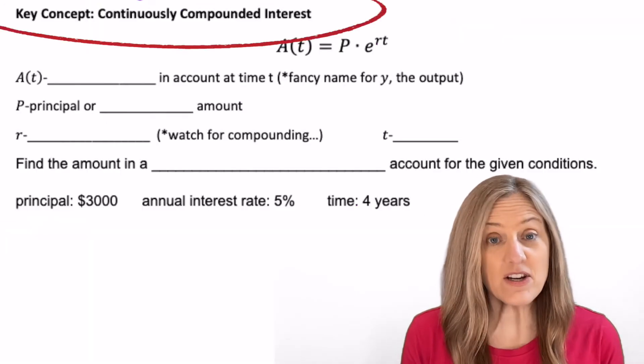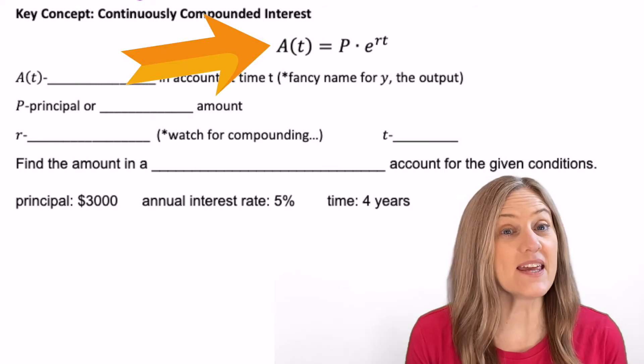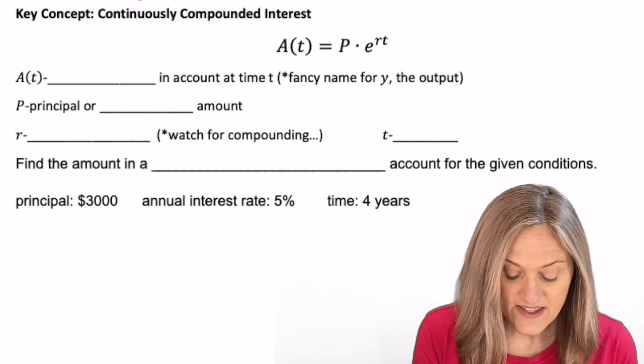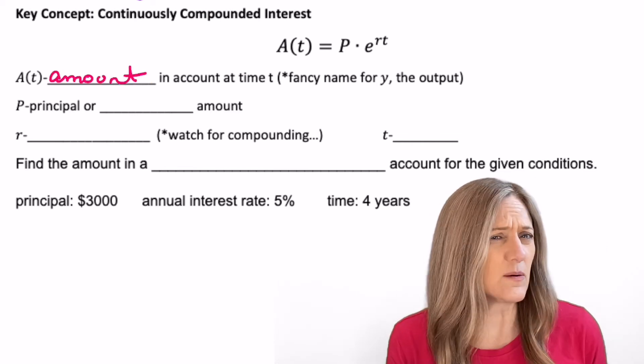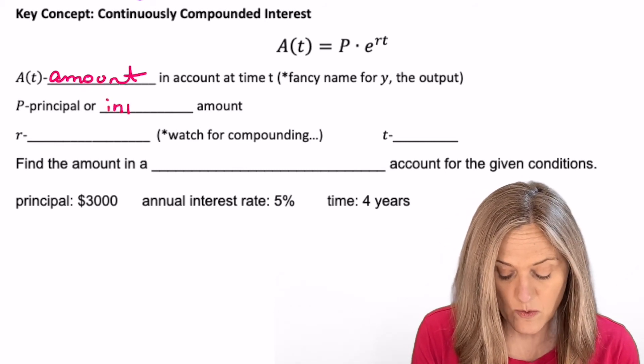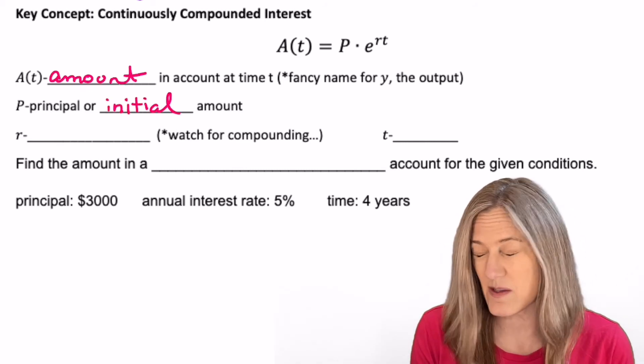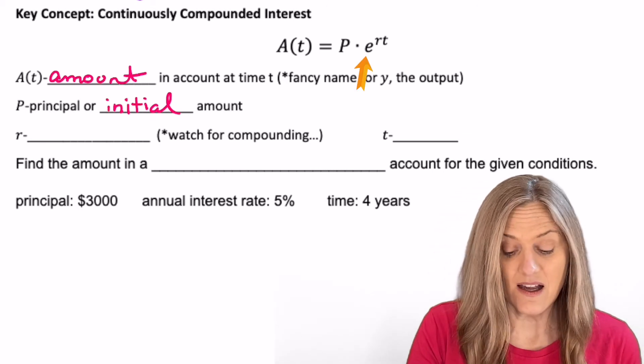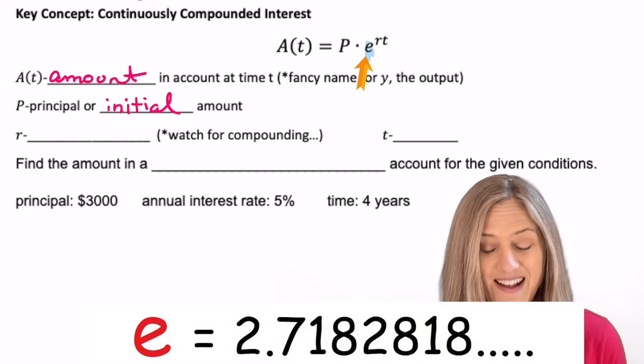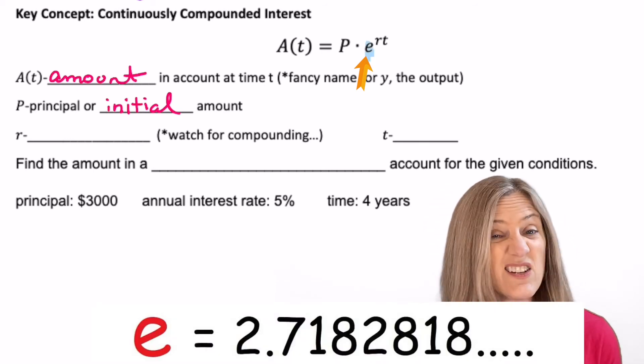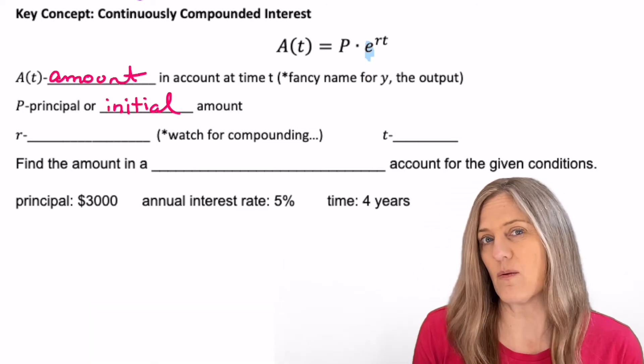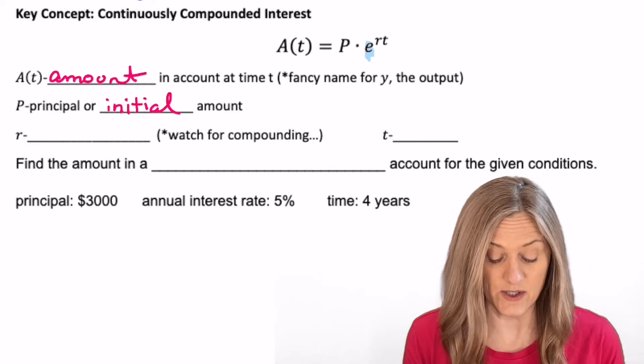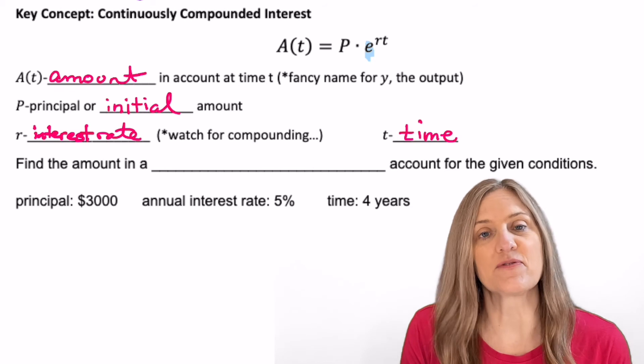Continuously compounded interest. We have an equation. A of T equals P times E raised to the RT. What's our A stand for? Well, that's the amount in the account at time T. P is going to be the principal or the initial amount. So can you really see that we're talking about an exponential equation still? What is our base? The base is E. E, of course, is not a variable. That's our number, 2.71828, et cetera. All right, what about R? Well, R is the interest rate in decimal form always for equations. And T is our time in years for this problem.